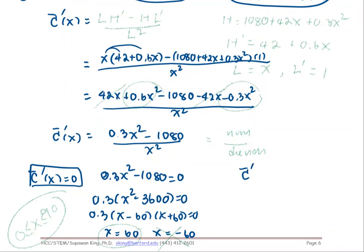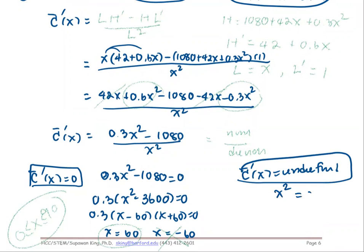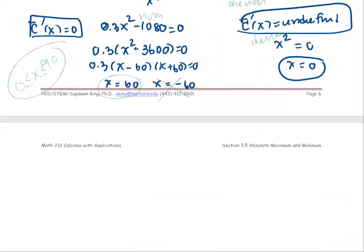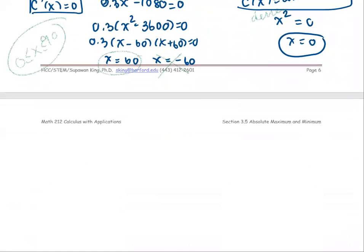The second case is where C-bar prime is undefined, which occurs when the denominator X² = 0, giving X = 0. Since 0 is still on the interval [0, 90], we have another critical value. To summarize, the critical values are X = 60 and X = 0.